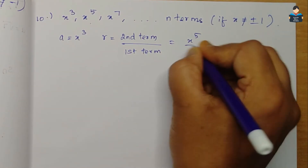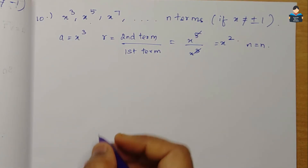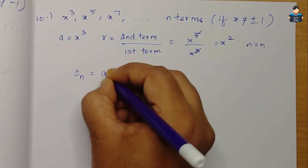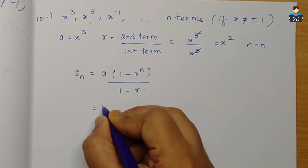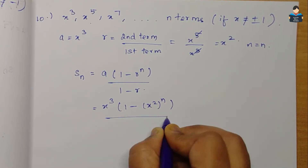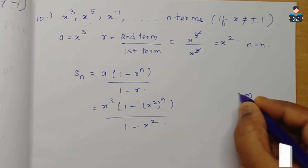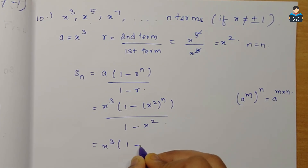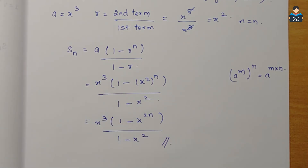Common ratio r = second term / first term = x⁵/x³ = x². Since n is a variable, we can use either formula. Using Sn = a × (1 − r^n)/(1 − r): Sn = x³ × (1 − (x²)^n) / (1 − x²). Using the power rule (a^m)^n = a^(mn): Sn = x³ × (1 − x^(2n)) / (1 − x²). This is the final answer for the 10th question.